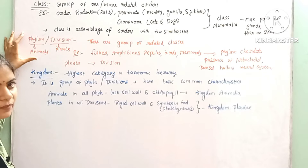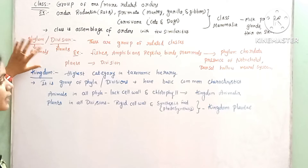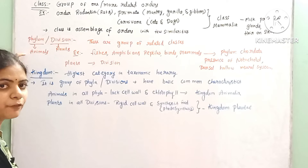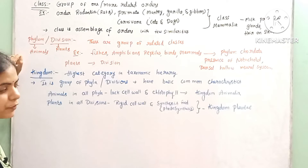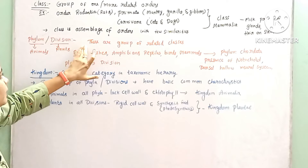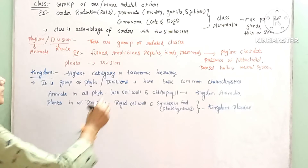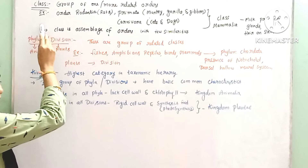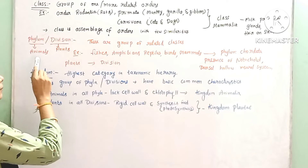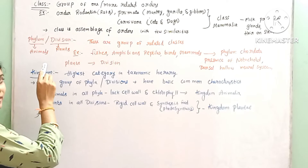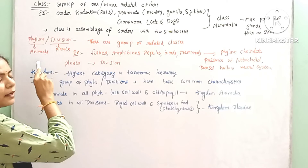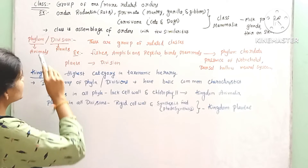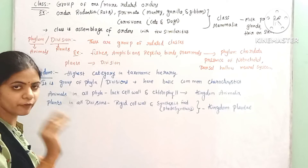Class is nothing but an assemblage of orders with few similarities. Next is phylum or division — phylum is used for animals and division is used for plants. It is a group of related classes.